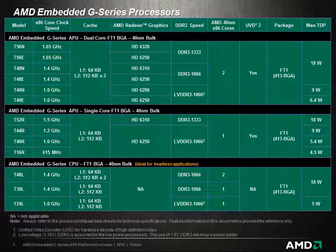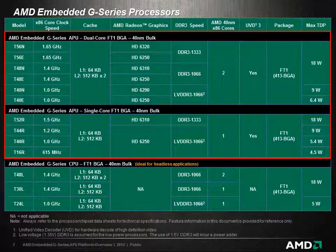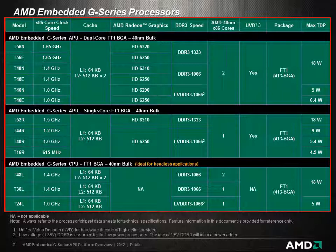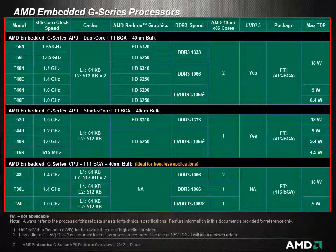Additionally, G-Series model configurations are available with Radeon HD 6000 Series graphics and in models without graphics, which are ideal for headless applications. All versions of the G-Series are pin-compatible, enabling a single board to be designed that can support any of the APUs.